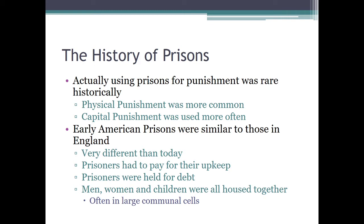We had prisons early in the 1700s, though they were different from the prisons we see today. Prisoners had to pay for their own upkeep — something we've been reinstituting. Prisoners were very often held for debt, which we theoretically abolished but has made a bit of a comeback. Men and women were often housed together with their children, and you had very large communal cells — the idea of small individual cells didn't necessarily exist on a wide scale.